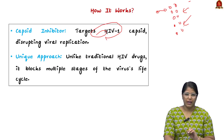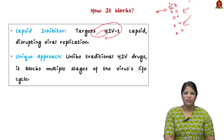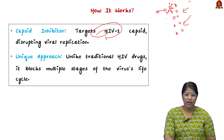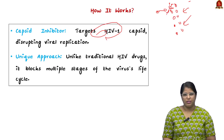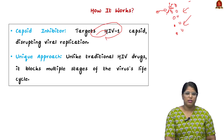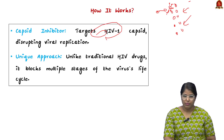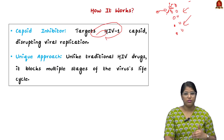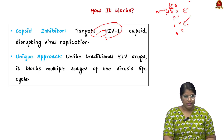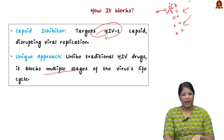This particular injection targets the replicating capsid — the capsid will be eliminated by this drug and it will stop the replication, ultimately causing the viral load to decline. This is a unique approach unlike traditional HIV drugs. Traditional HIV drugs focus on reducing the impact of the virus, but Lenacapvir blocks multiple stages of the virus's life cycle.